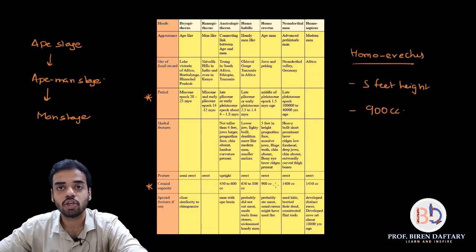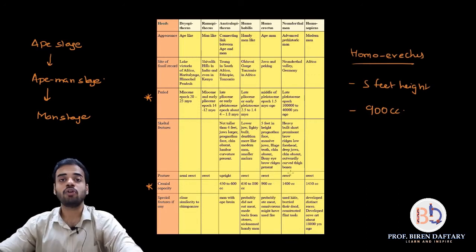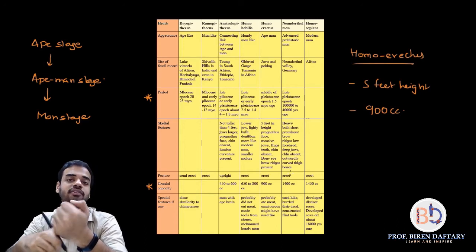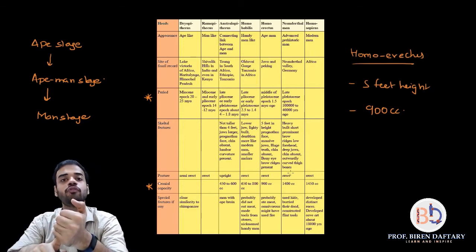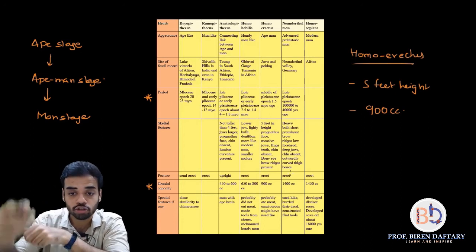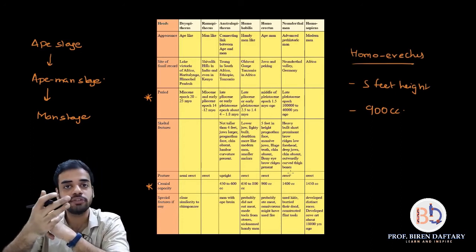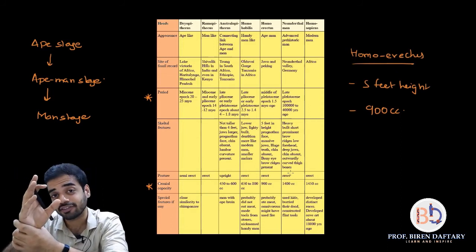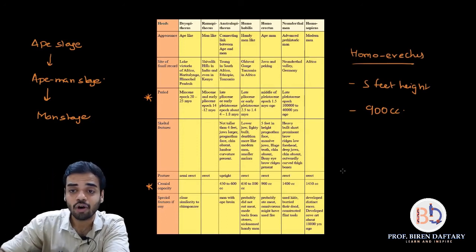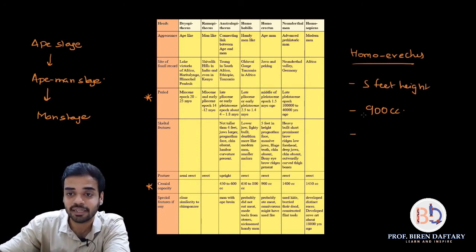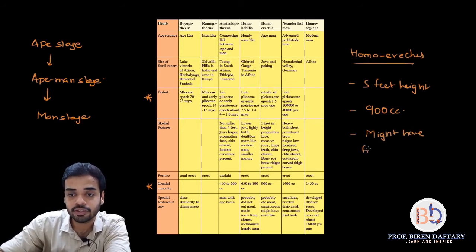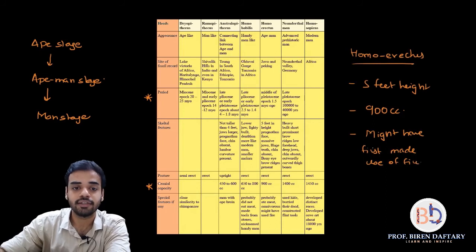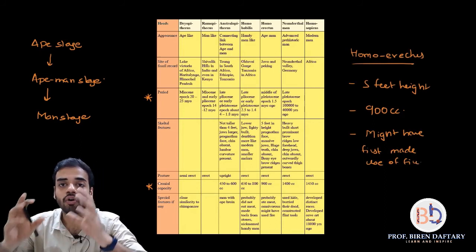Special features of Homo erectus: it is thought this was the first stage to use fire. They were probably omnivorous — able to eat everything — and might have first made use of fire. This is a key fact to remember about Homo erectus.